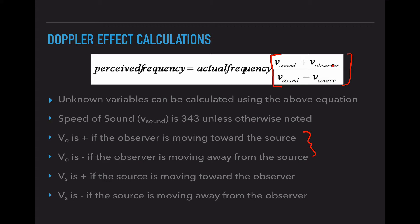If it's moving toward the source, you keep that as a positive. If it's moving away from the source, you're going to plug in the numerical value and put a negative sign in front of it.